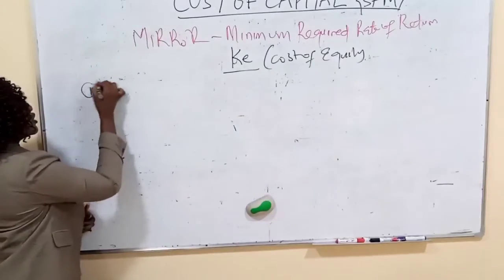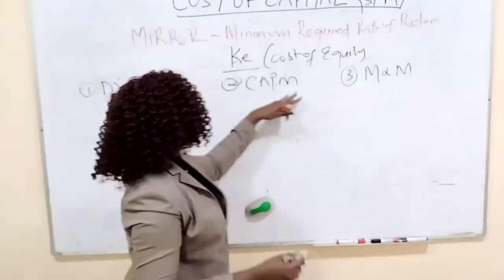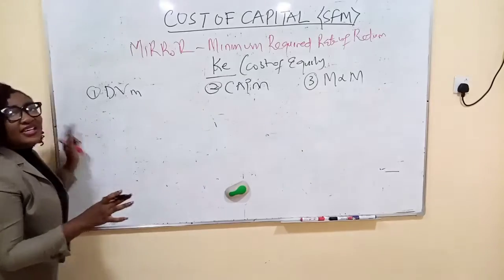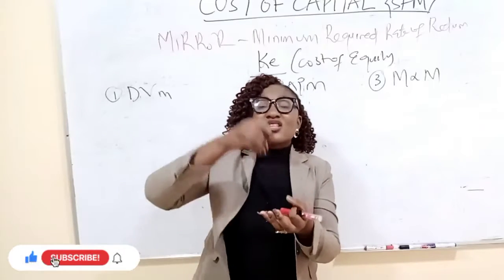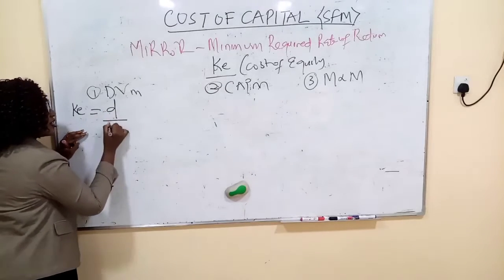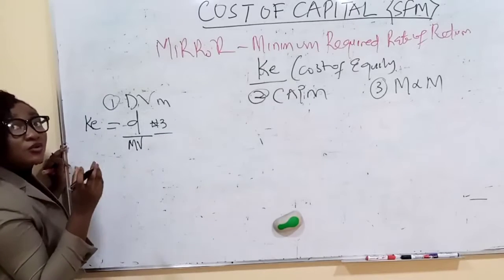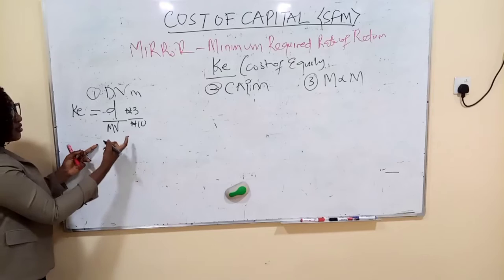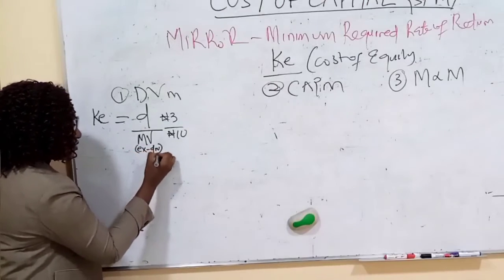The first approach to cost of equity is the Dividend Valuation Model, the second is the Capital Asset Pricing Model, and the third is Modigliani and Miller. Under the dividend approach, cost of equity is determined by dividend over market value per share. For example, if a company is paying a dividend of 3 Naira per share and the market value is 10 Naira per share, the cost of equity is 30%. Always note that this market value must be ex-div — it must not be carrying the value of dividend.